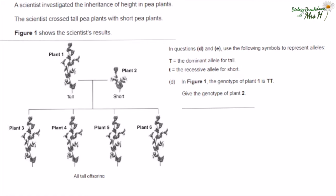A scientist investigated the inheritance of height in pea plants. The scientist crossed tall pea plants with short pea plants. Figure one shows the results — crossing tall with short gave all tall offspring, which suggests that tall is dominant. Use the symbols big T for tall and little t for short. In figure one the genotype for plant one is TT. What is the genotype for plant two? As short is recessive, you will only see short plants if they have two recessive alleles, so it has to be tt.